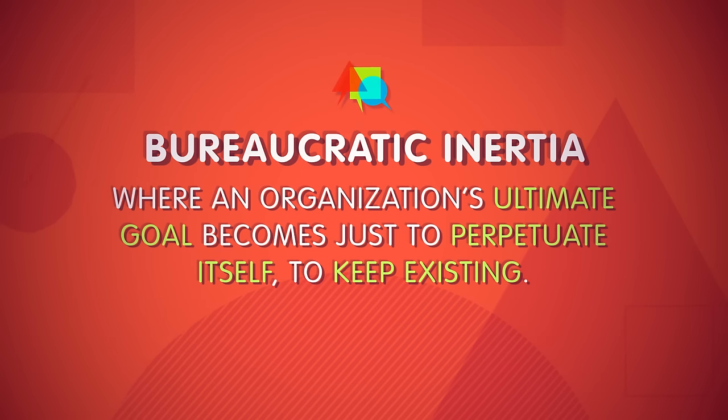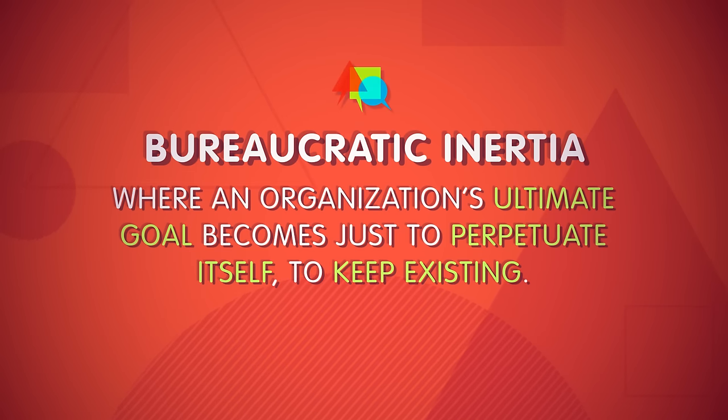But the very things that make bureaucracies effective also cause their share of problems. One problem is that sometimes bureaucracies are not actually that efficient. Since bureaucracies are strictly hierarchical and rule-based, those rules can sometimes get in the way — this is what people mean when they talk about bureaucratic red tape. That focus on rules leads to another kind of inefficiency: bureaucratic ritualism, where the rules become a kind of end in themselves, ultimately interfering with the organization's goals. Faith in the rules can become just as damaging as faith in tradition ever was. And a group's goals can even shift so much that it comes down with bureaucratic inertia — where an organization's ultimate goal becomes just to perpetuate itself, to keep existing. This can be intentional, made by those who have the most to lose if the organization disappeared, or it can happen just because its members believe the organization does good work.